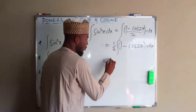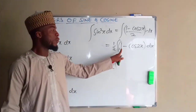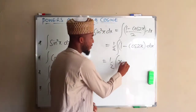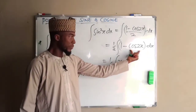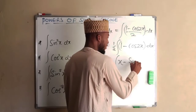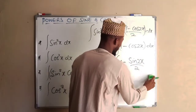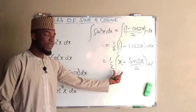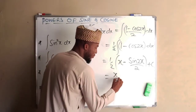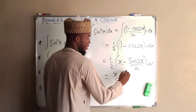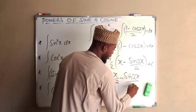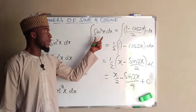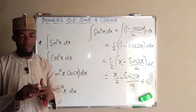1 over 2 multiplied by: if you integrate 1 with respect to X you obtain X, minus if you integrate cos 2x you obtain sine 2x divided by 2, then plus the constant of integration. If you expand this, you get X divided by 2 minus sine 2x divided by 4 — because 2 times 2 is 4 — plus the constant of integration. This is how to integrate sine squared X.